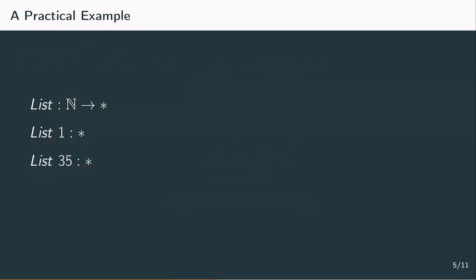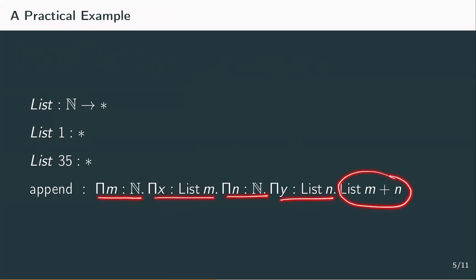This is very useful for creating a type for a function like append. This function takes numbers m and n and lists of corresponding lengths and returns the type for a list of length m plus n.